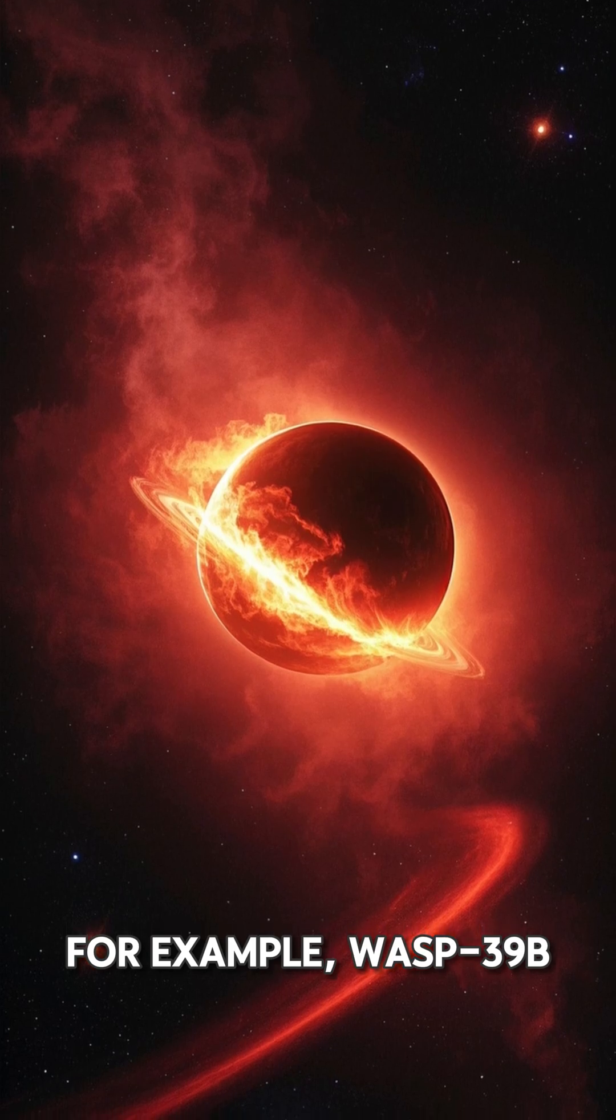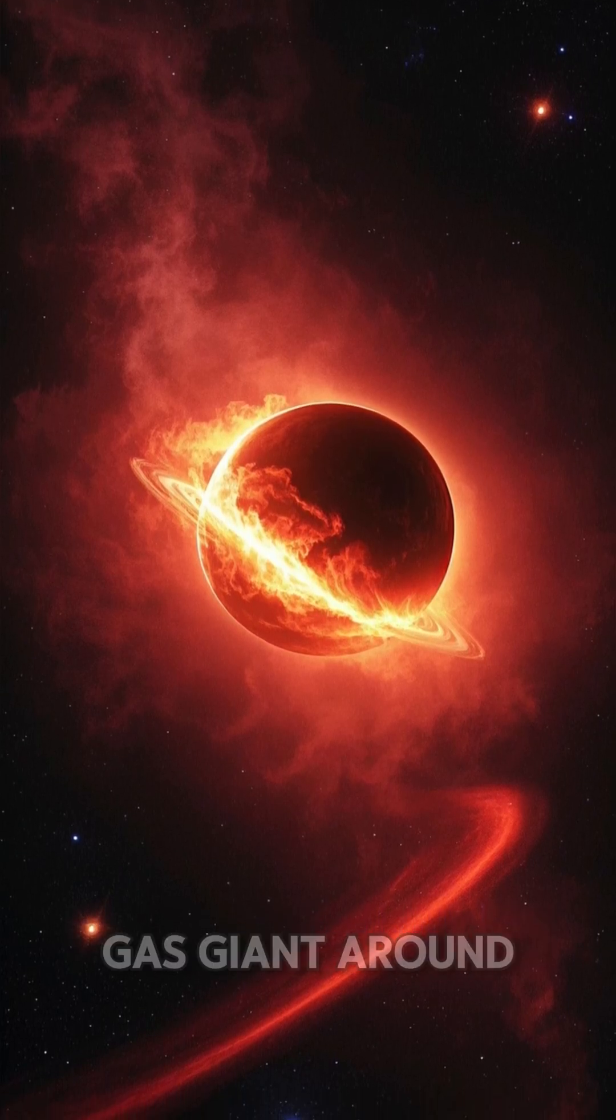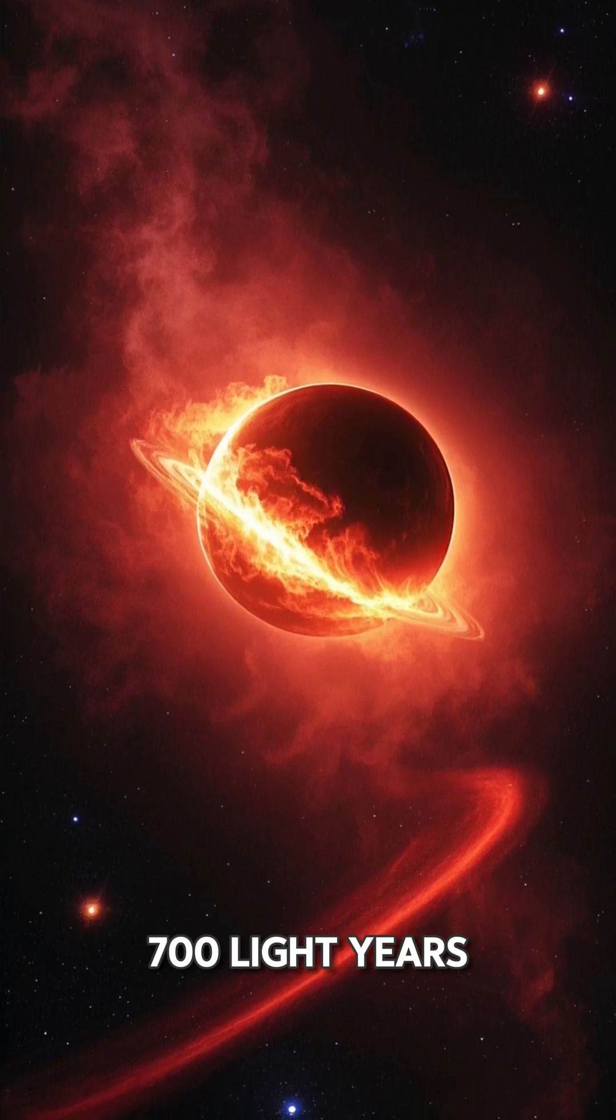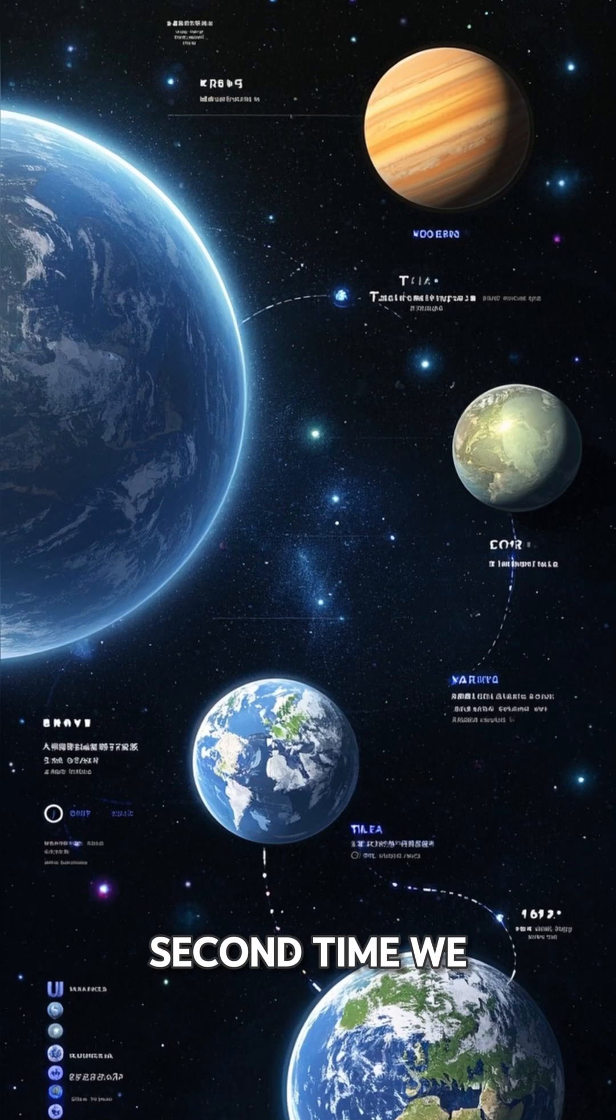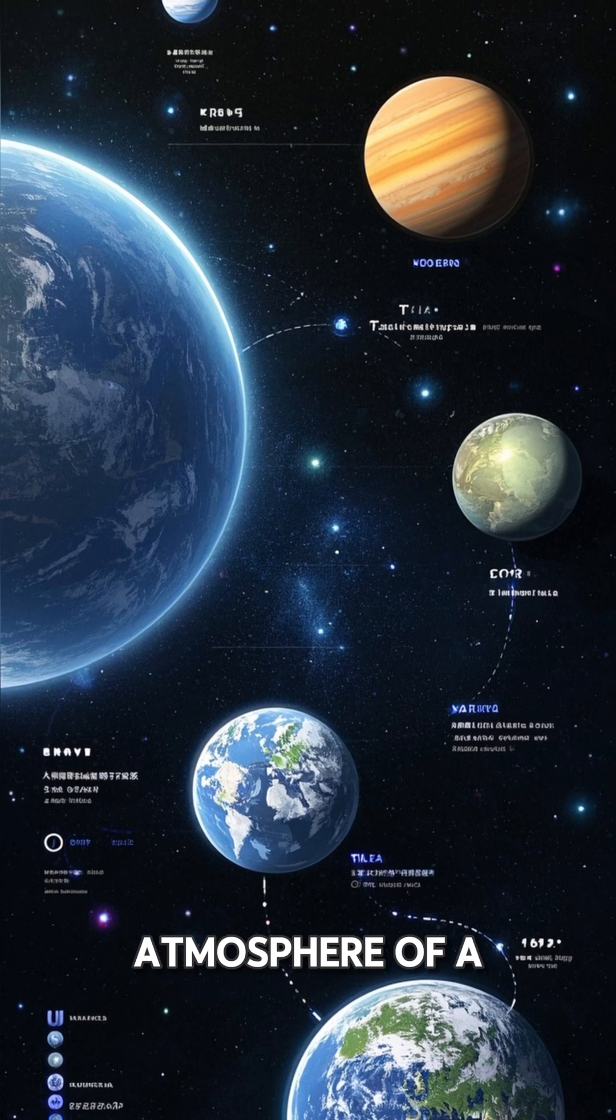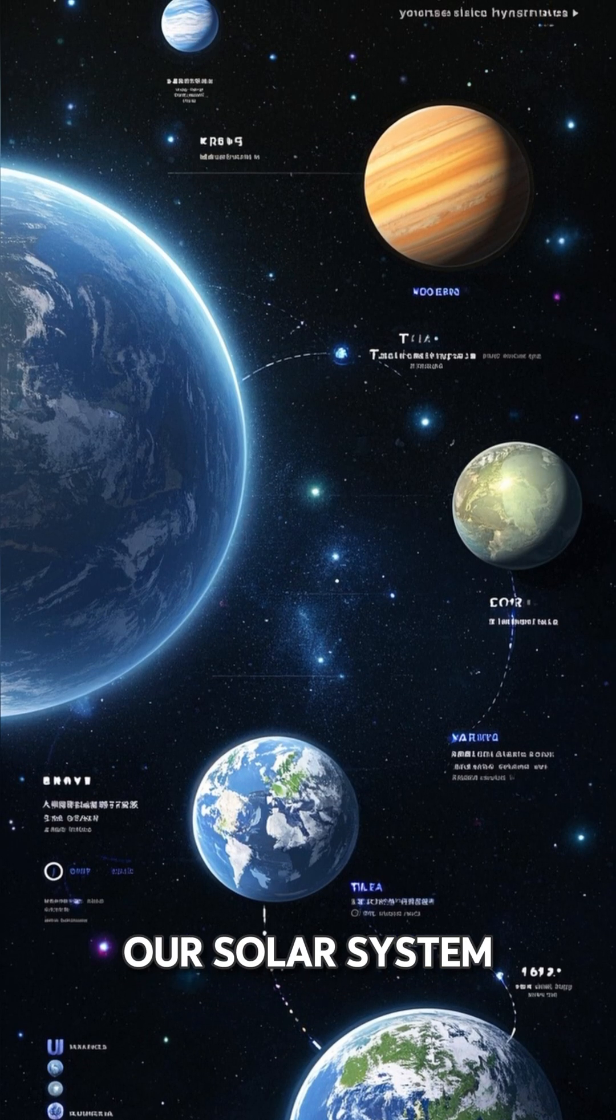For example, WASP-39b, an extremely hot gas giant around 700 light-years away, has an atmosphere that contains more water than all the water on Earth. And it's only the second time we've seen water in the atmosphere of a planet outside of our solar system.